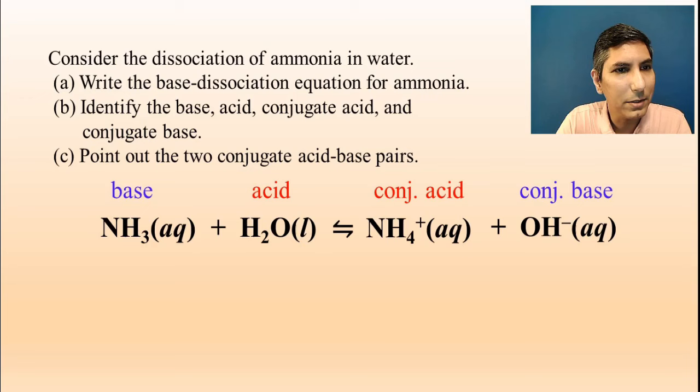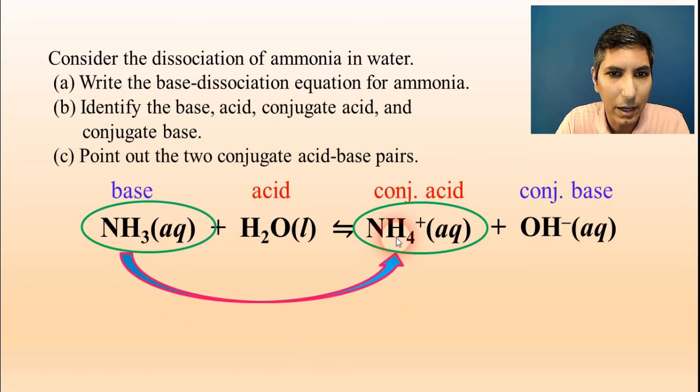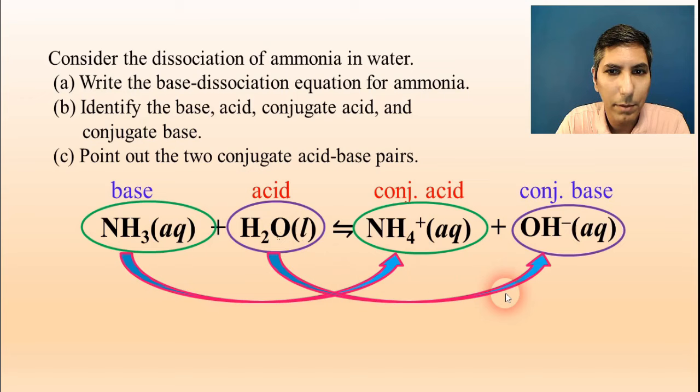Now part C says point out the two conjugate acid base pairs. Well, there's the base. Do you see the conjugate acid that looks a whole lot like it? Well, yeah, that would be the ammonium. So there we have a conjugate acid base pair. And then here's another conjugate acid base pair. The water paired up with the hydroxide.